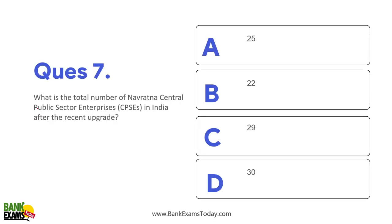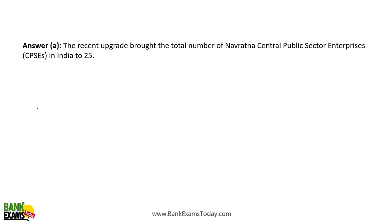What is the total number of Navratan Central Public Sector Enterprises? There are now 25 Navratan public sector enterprises. The limit has been raised — they can now execute projects worth up to 1200 crore rupees without approval from the central government, along with some extra powers.